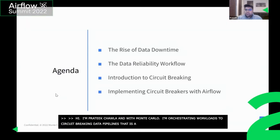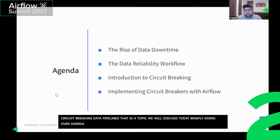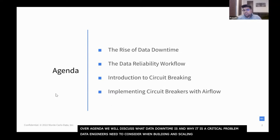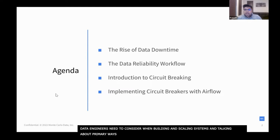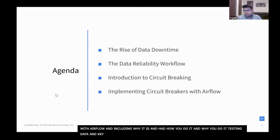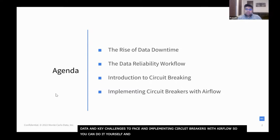Let's briefly go over our agenda. First, we're going to discuss what data downtime is and why it's a critical problem data engineers need to consider when building and scaling their systems. Then we'll talk about the primary ways teams solve it via a data reliability workflow. After that, we'll talk about circuit breaking with Airflow — including what it is, how you do it, and why you do it versus testing your data, and some key challenges. Next, we'll discuss how to implement circuit breakers with Airflow so you can improve your company's data quality in the process.